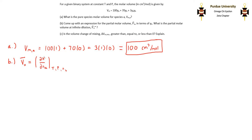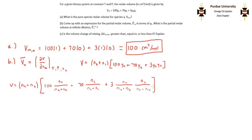In this expression, V is total volume, so we're going to have to multiply the molar volume expression by the total moles, which is Na plus NB. To simplify the total volume expression further, I'm going to use the fact that YA is equal to Na over Na plus NB, and YB is equal to NB over Na plus NB. From here, we can cancel out some of the Na plus NB terms.